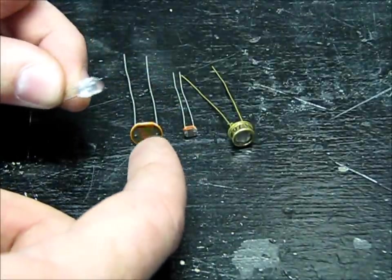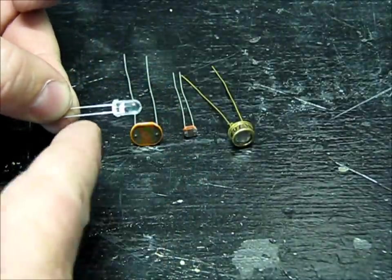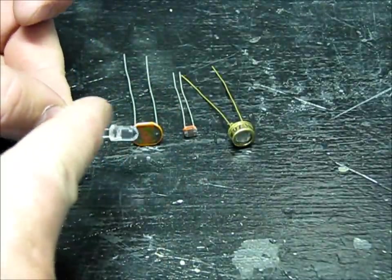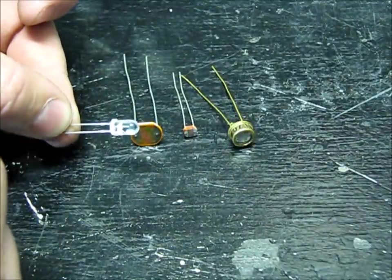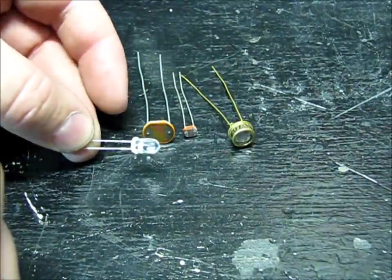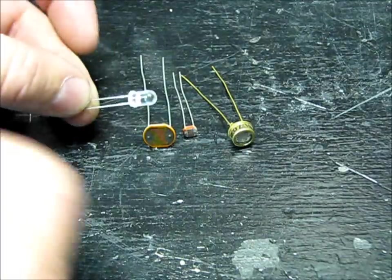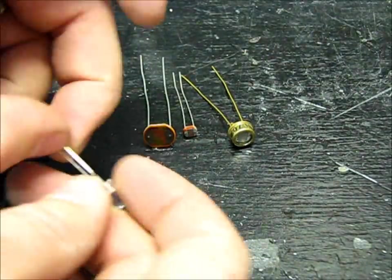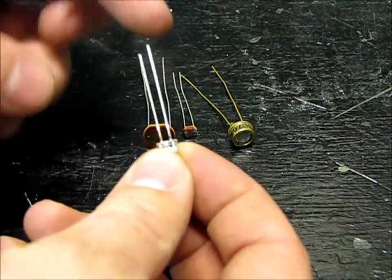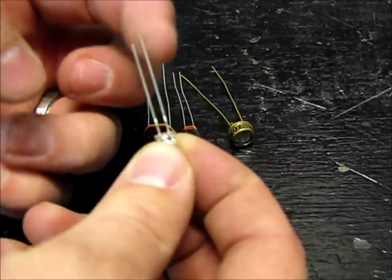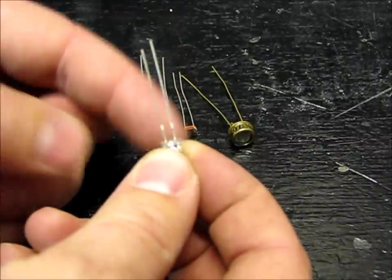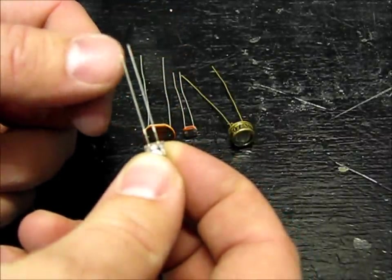So when light shines in, it allows more electricity through. It's basically the same thing, only this is definitely polarized. You can only flow through positive in the anode, the long leg, and then negative on the cathode.